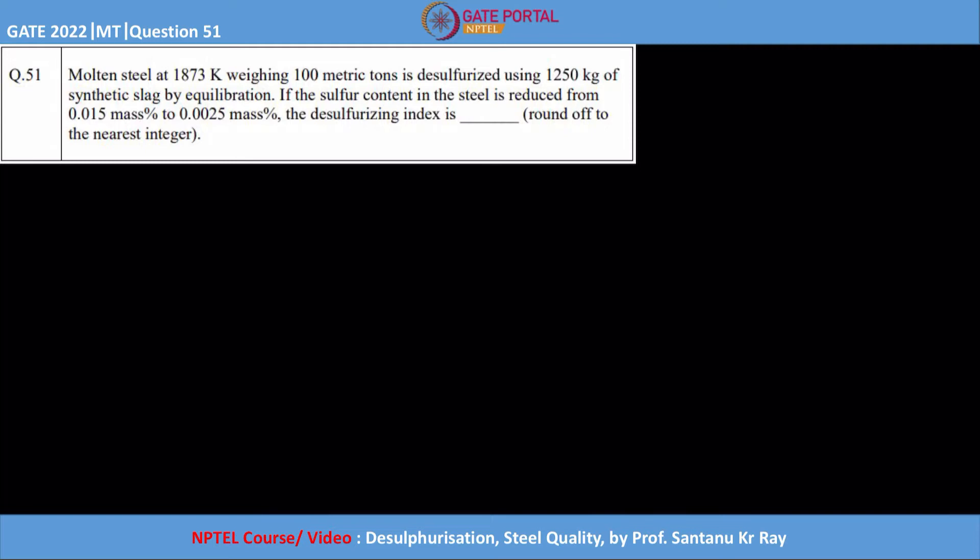Hello guys, this is one more question from GATE 2022, question number 51. It says molten steel at 1873 Kelvin weighing 100 metric tons is desulfurized using 1250 kg of synthetic slag by equilibration.